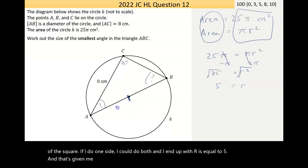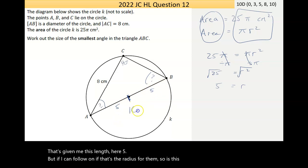And I end up with r is equal to 5. Now, that's giving me this length here, 5. But if I can follow on, if that's the radius, then so is this. So that whole length there is 10.